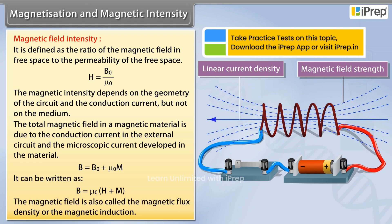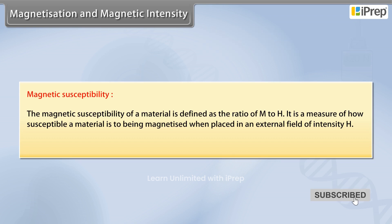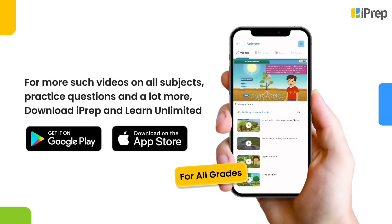The magnetic susceptibility of a material is defined as the ratio of M to H. It is a measure of how susceptible a material is to being magnetized when placed in an external field of intensity H. M is equal to the product of χ and H.